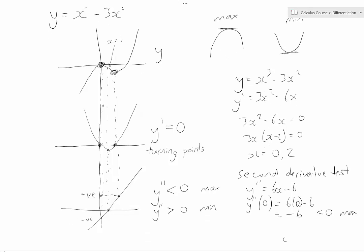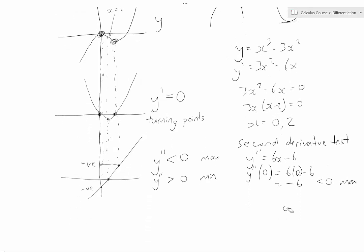If I substitute in, so I'll just scroll up a bit here. If I substitute in the other x-coordinate of a turning point, which was 2, I'm going to get 6 lots of 2 minus 6, which is 6. That is positive, is greater than zero, therefore the turning point must be a minimum.